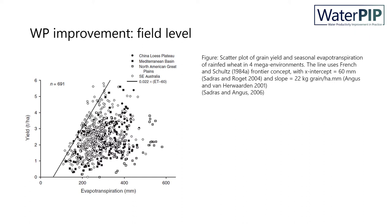There is room to improve water productivity at field level. On the screen is a scatter plot of wheat yield versus evapotranspiration in four mega environments, showing that the slope — and hence water productivity — varies even within the same environment. The reasons range from abiotic stress caused by temperature, too little or too much agricultural inputs, and salinity, as well as biotic stresses such as weeds, diseases and pests.